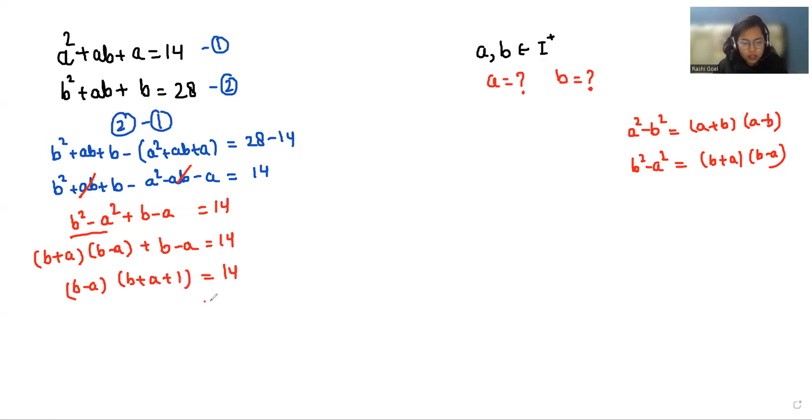Now we have two factors. So 14 we can write as 2 times 7 or 1 times 14.